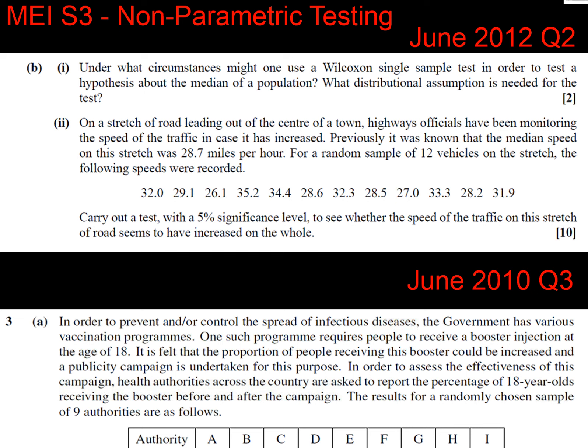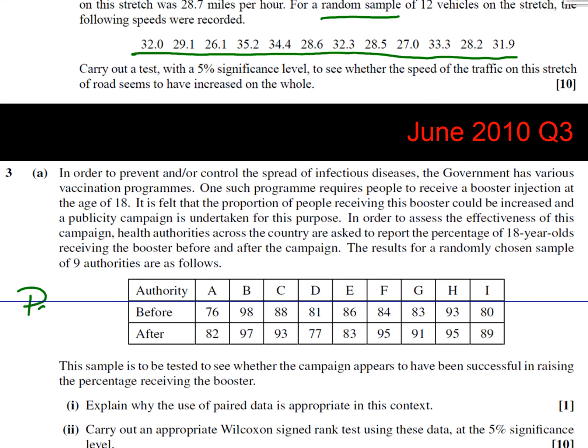This video covers non-parametric testing in the S3 syllabus, specifically Wilcoxon signed rank testing. There are two types of questions: one involves a single sample of data, and the other involves paired testing with two lines of data — like before and after measurements for named individuals or authorities. Both question types require carrying out a hypothesis test using Wilcoxon signed rank.